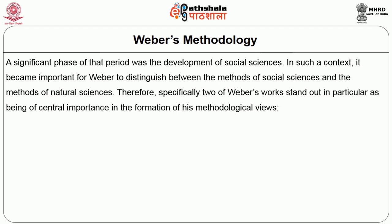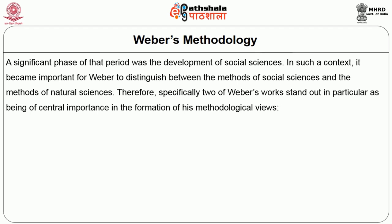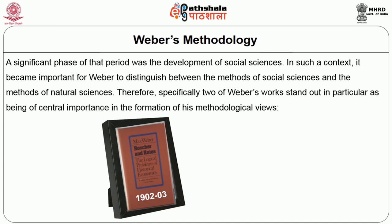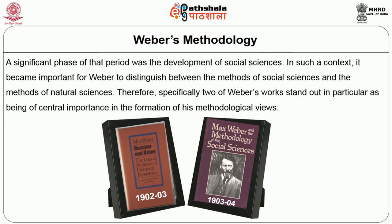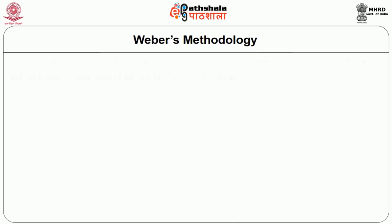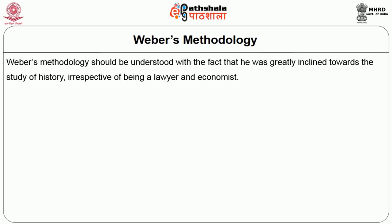A significant phase of that period was the development of social sciences. It becomes important for Weber to distinguish between the methods of social sciences and the methods of natural sciences. Two of Weber's works stand out in particular: first, Rocher and Nice: The Logical Problem of Historical Economies, written between 1902 and 1903; and second, Objectivity in Social Sciences and Social Policy, written between 1903 and 1904. In the later work, Weber discusses at length the aspects of objectivity as part of methodology for social sciences. Weber's methodology should be understood with the fact that he was greatly inclined towards the study of history, irrespective of being a lawyer and economist.